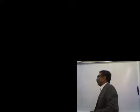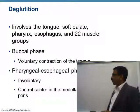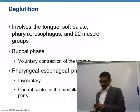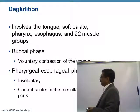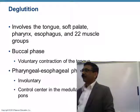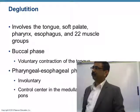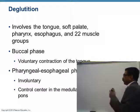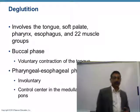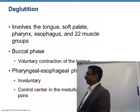Deglutition is also called swallowing. For swallowing of the food bolus, you need the help of the tongue, which initiates the swallowing. Then the soft palate, pharynx, esophagus, and 22 muscle groups all help in swallowing.